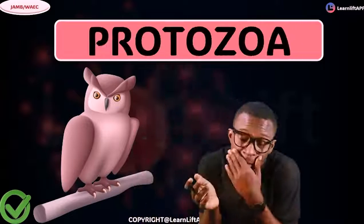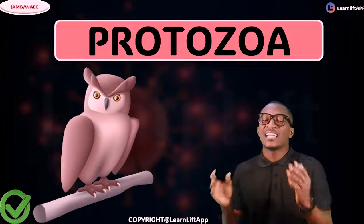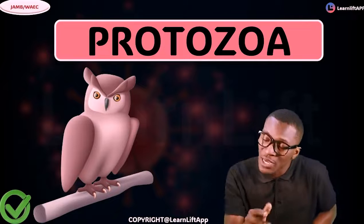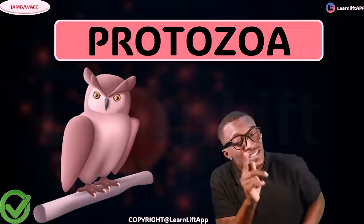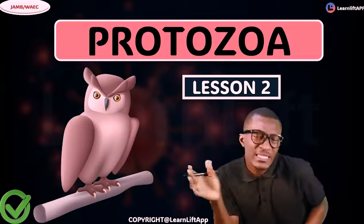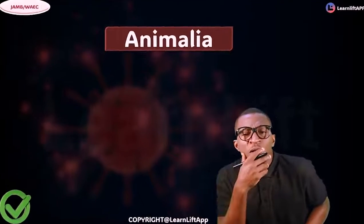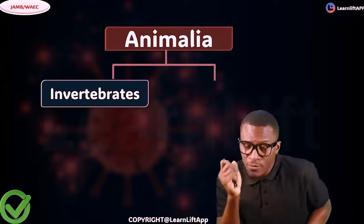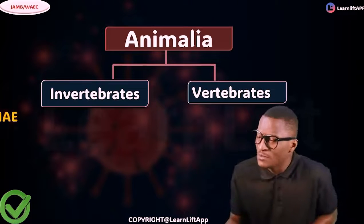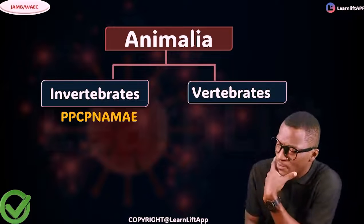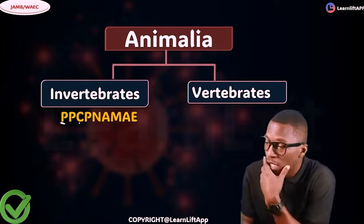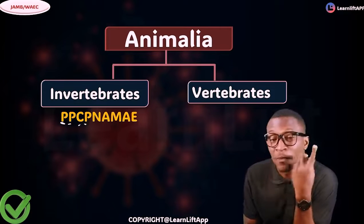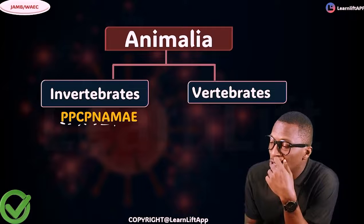Hello guys, in this class let's talk about protozoa. Last class we talked about the classification of animals, so let's now focus on protozoa. Are they vertebrate or invertebrate? They are invertebrate. Under invertebrate, we have the phyla: Protozoa, Porifera, Coelenterata, Platyhelminthes, Nematoda, and Annelida.